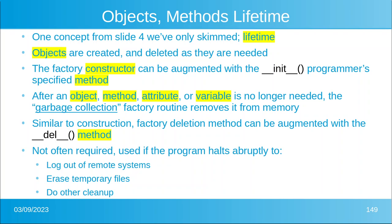After an object, method, attribute, or variable is no longer needed, from the point of view of the Python system, the garbage collection routine removes it from memory. This runs in the background at all times. You don't often have to create a `__del__` method, but it is used if the program halts abruptly because of an error — usually to log out of remote systems, erase temporary files, or that kind of thing.